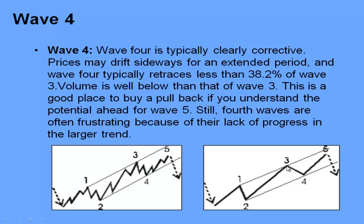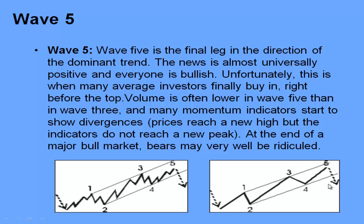Wave 4 is basically a correction of Wave 3. We need to notice that Wave 4 cannot retrace more than 38.2% of Wave 3, so it is a very shallow correction. There is a lot of frustration in Wave 4 because people who bought early don't want to sell, so there is less supply, but there is also less demand because many people are expecting prices to come down further. It creates a checkmate scenario — Wave 4 is considered more of a shallow, almost sideways correction.